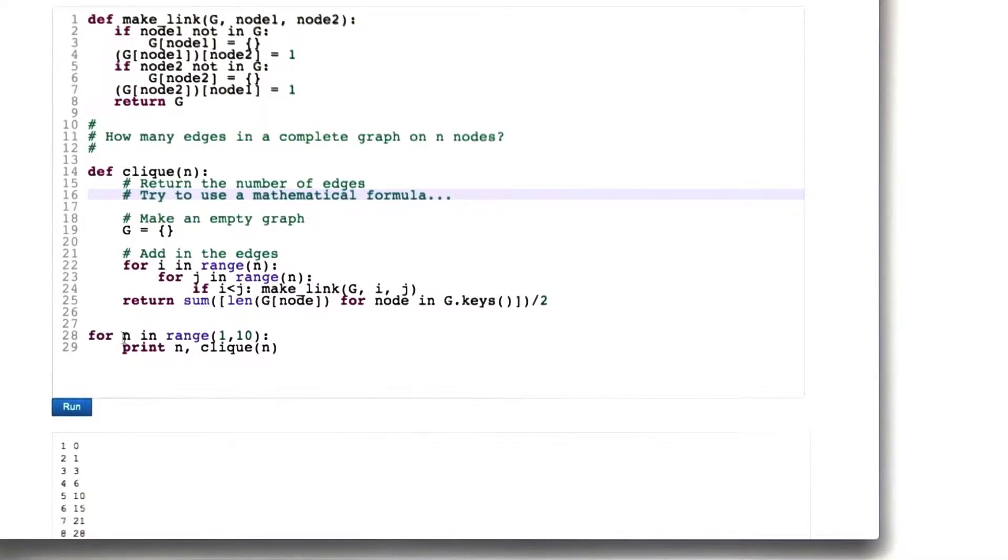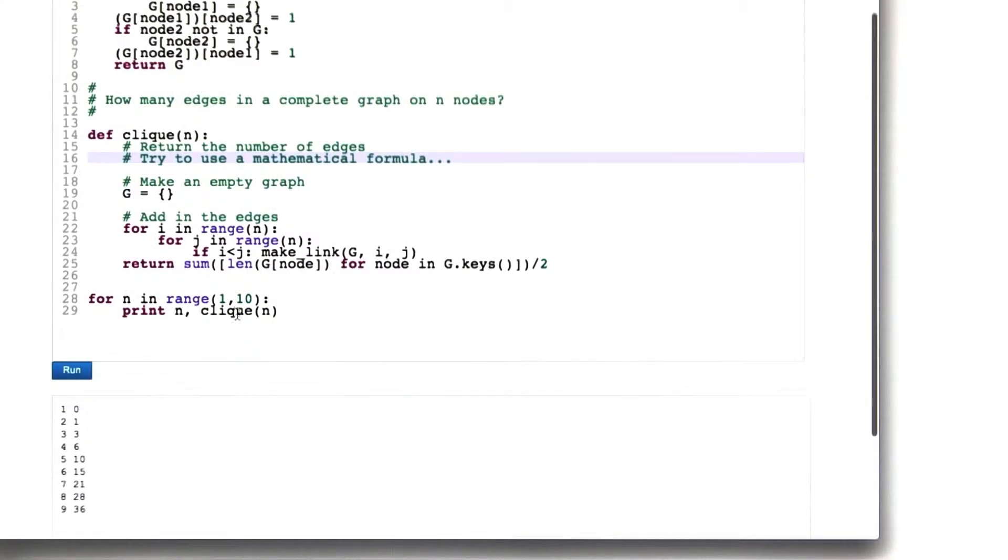Let's look at what happens if you loop on all the different values of n from 1 to 9 and print n and the number of edges in the clique. A graph with one node has no edges. A graph with two nodes fully connected has one edge.